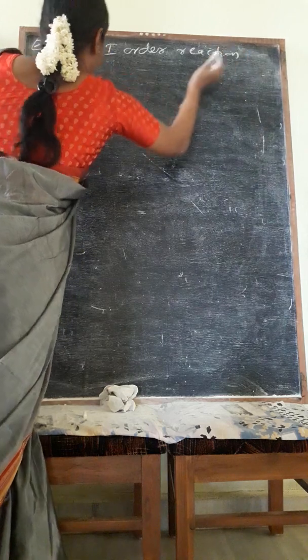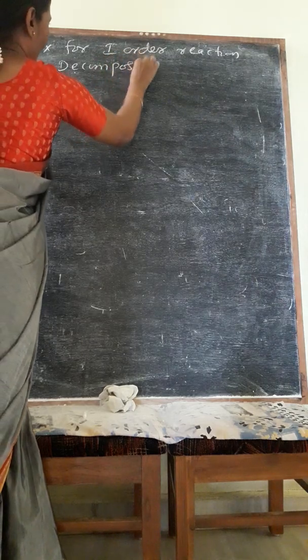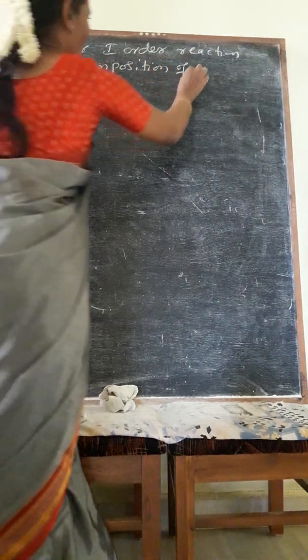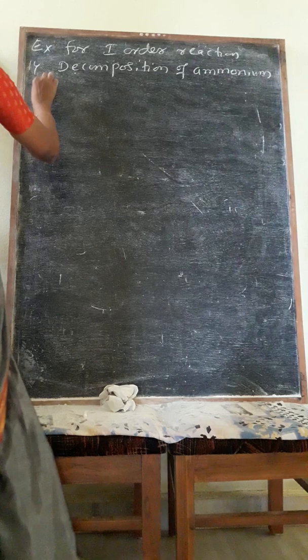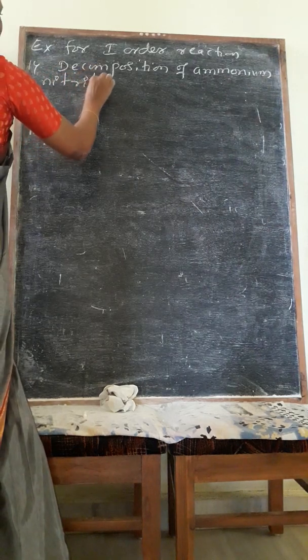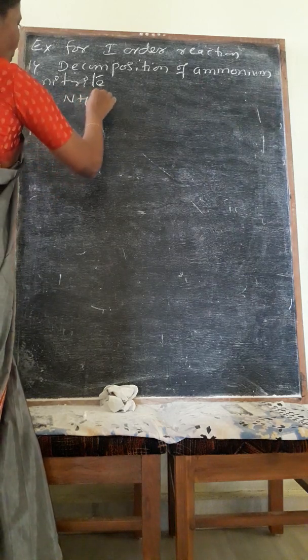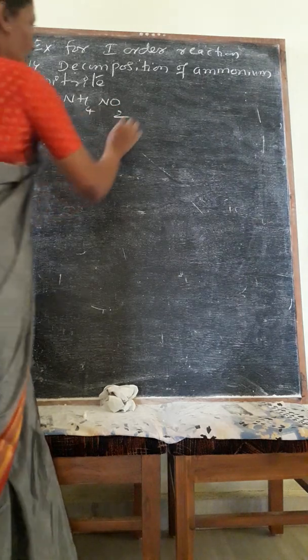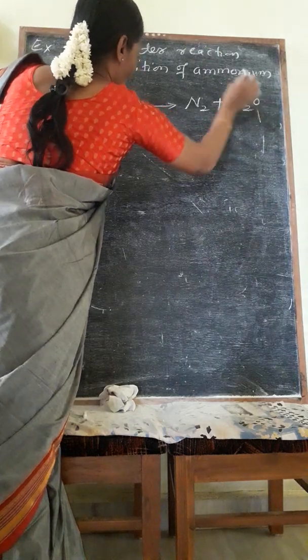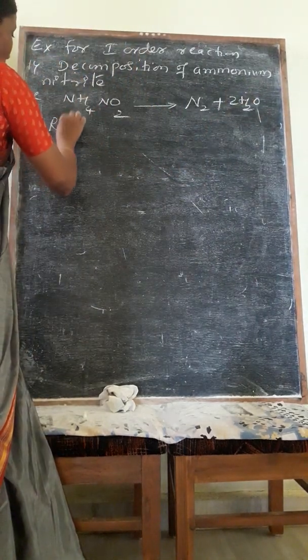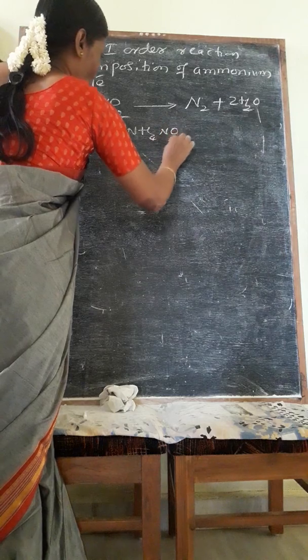First order reaction. First one is decomposition of ammonium nitrite. The equation is NH4NO2, ammonium nitrite decomposition gives N2 plus 2H2O. The rate equation is represented as rate is directly proportional to NH4NO2, that is first power.